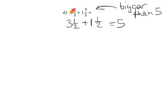Because 3 and 2/3 is larger than 3 and 1/2, and 1 and 3/5 is larger than 1 and 1/2. And when you add them together, you get 5. So we know our answer has to be bigger than 5.